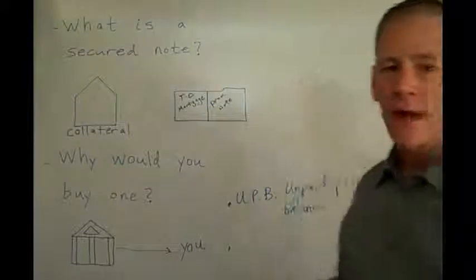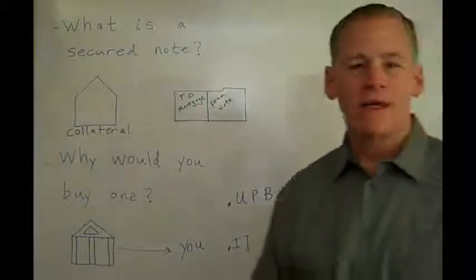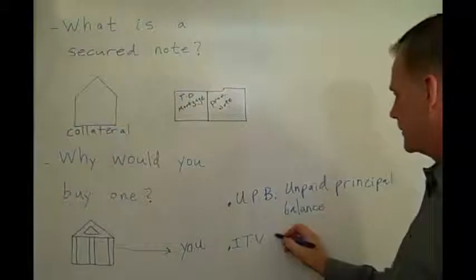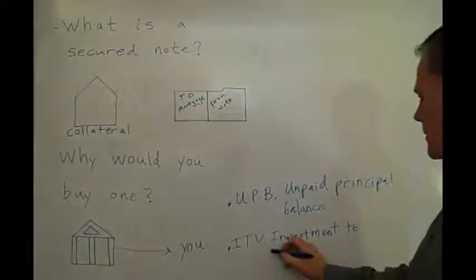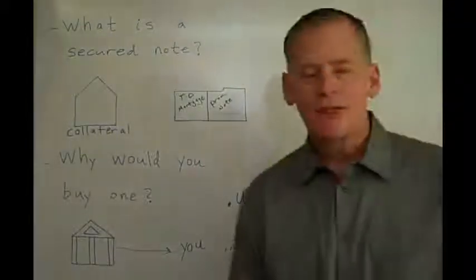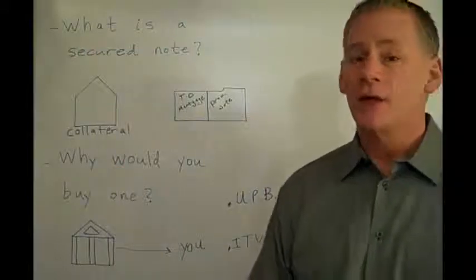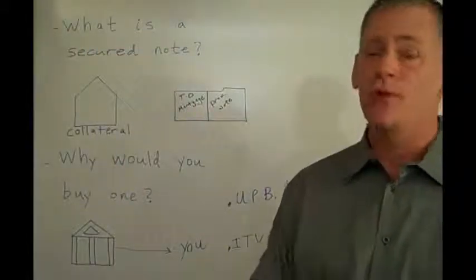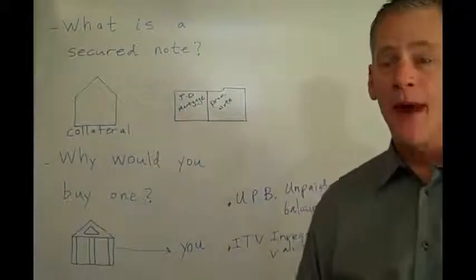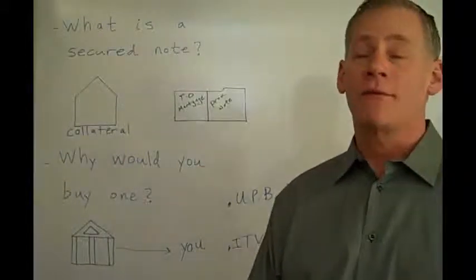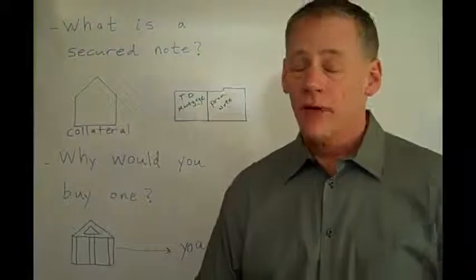Another reason why you would want to buy debt from the bank is because of something we call ITV, Investment to Value. Now imagine that the UPB that you bought is $100,000. And let's imagine that you only spent $30,000 for that $100,000 of debt that someone owes you. Now you've just cut yourself a great deal. Because if they have to pay you back for all $100,000 that you bought for $30,000, your ITV is at a great discount. A very exciting prospect.